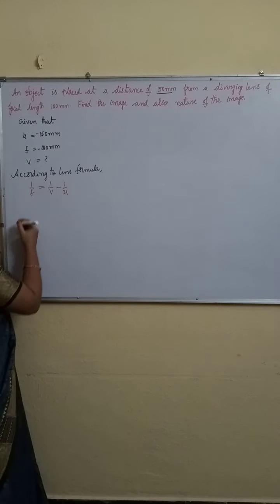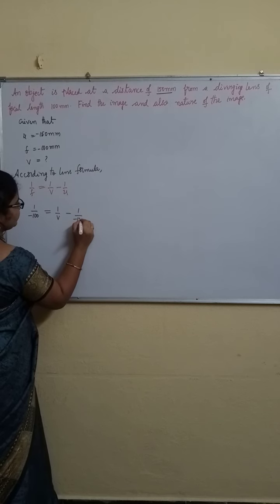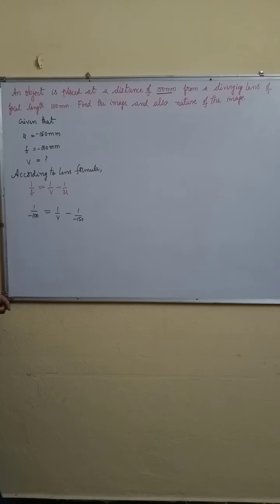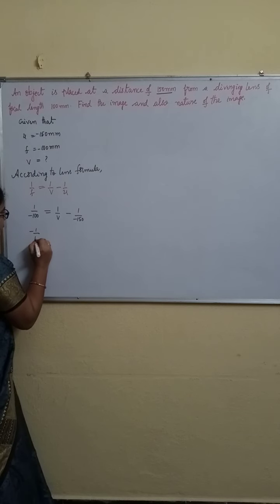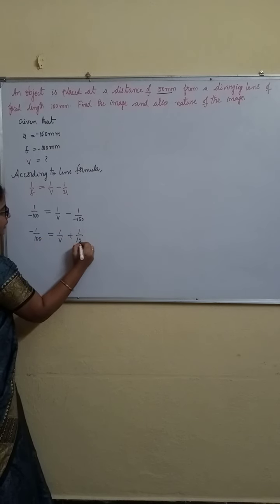Now 1 by F is minus 100, 1 by V minus 1 by minus 150. Minus minus will become plus. Minus 1 by 100 is equal to 1 by V plus 1 by 150.